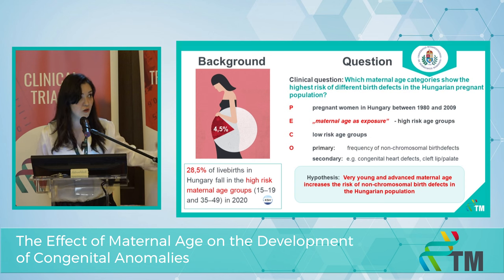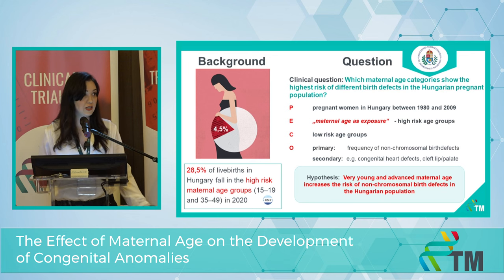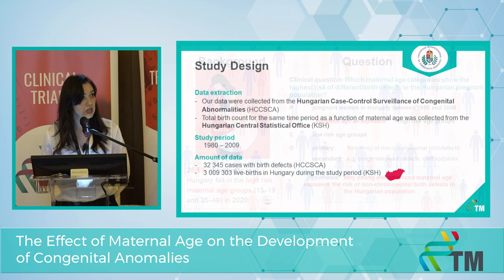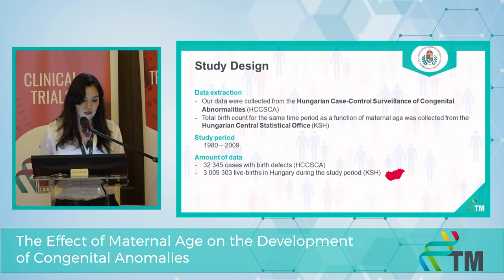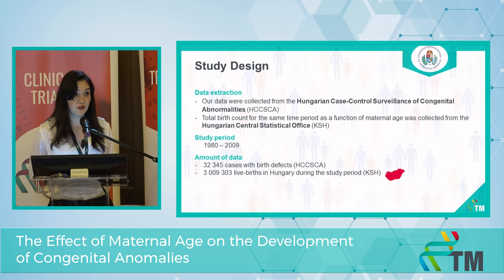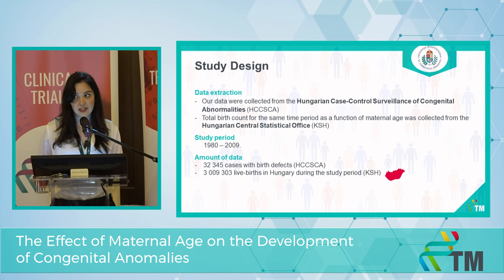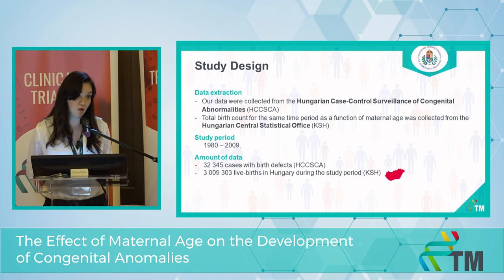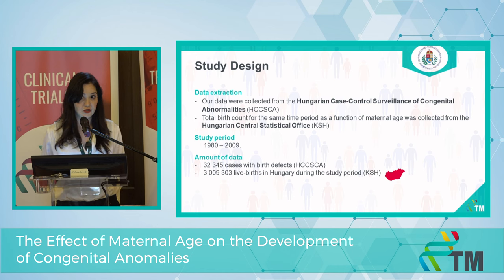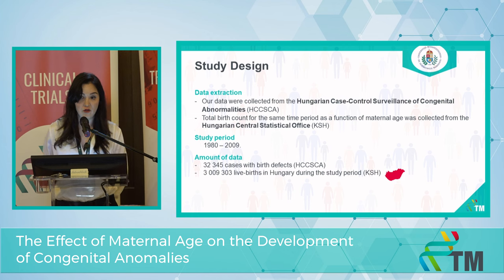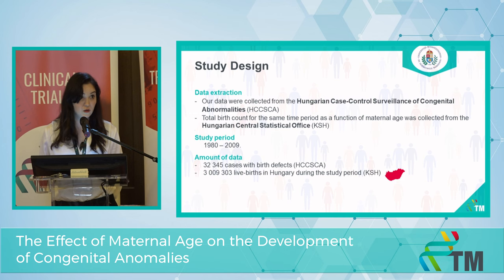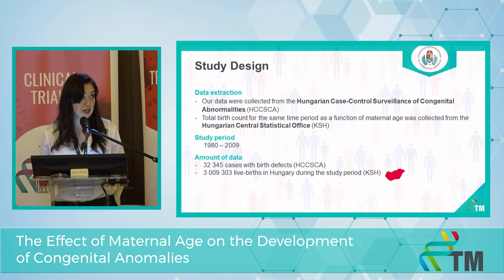The structure of our study is the same as the meta-analysis in terms of clinical question and PICO framework. We collected our data from the Hungarian Case-Controlled Surveillance of Congenital Abnormalities, which is a really unique database in terms of size, comprehensiveness, and wide range of information. We have detailed information about more than 30,000 pregnancies compared with a control group from the Hungarian Central Statistical Office — over 3 million pregnancies total.